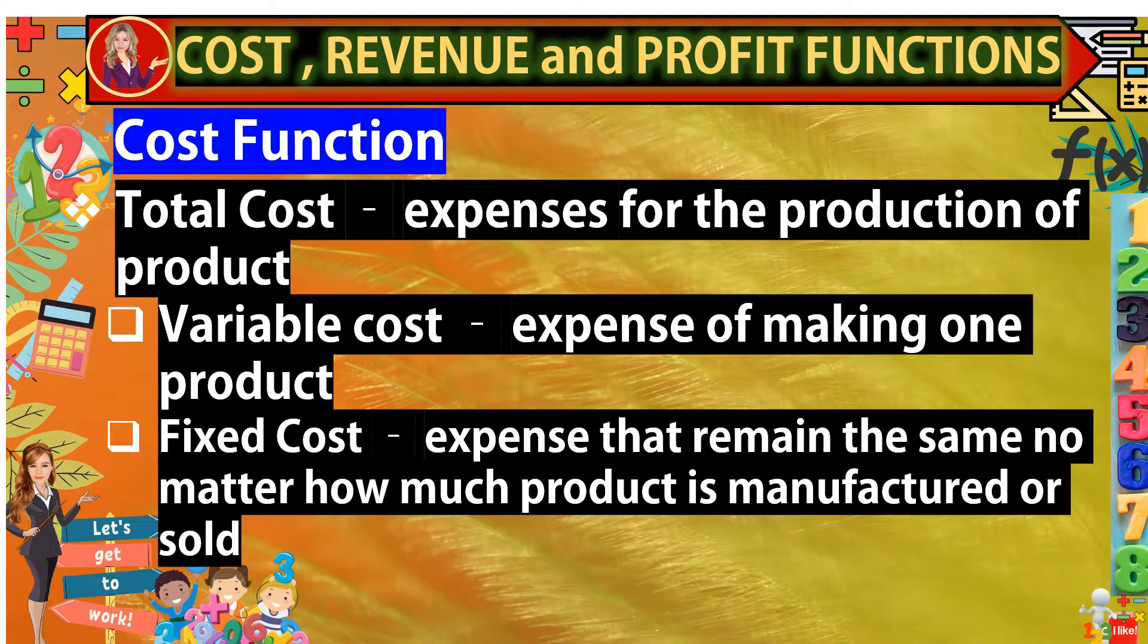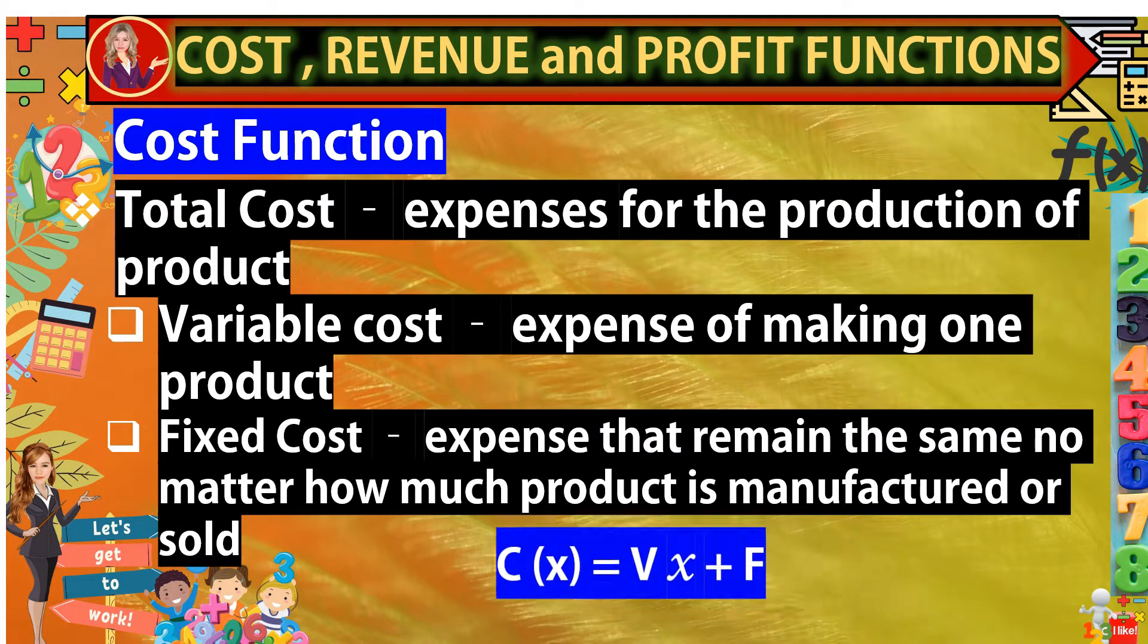While fixed cost refers to the expense that remains the same no matter how much product is manufactured or sold. This cost does not change with the quantity on production process. It includes expenses for rent, utilities and wages of employees, loan payments, and a lot more. This value remains the same no matter how much product manufactured or sold. And for its formula on function, we have C(x) is equal to the variable cost times x where x refers to the number of products plus f.